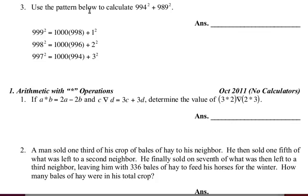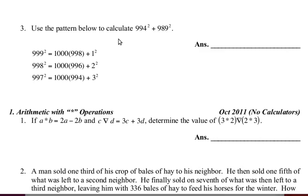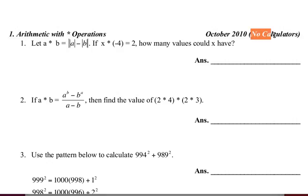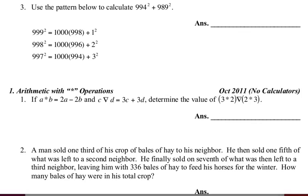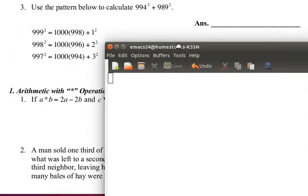Use the pattern below to calculate 994 squared plus 989 squared, and then they give us a list of this pattern. Remember, no calculators. You can't just type this into your calculator. You have to actually use this pattern in order to do this.